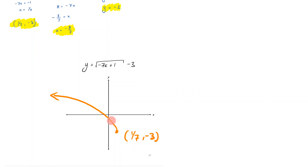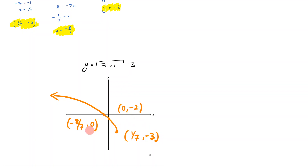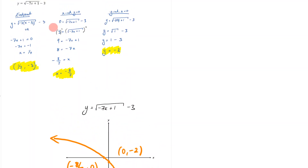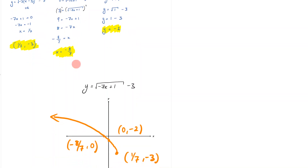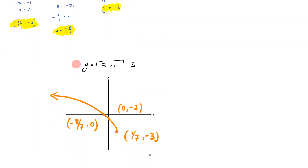The endpoint is at (1/7, negative 3). The y-intercept is at (0, negative 2), and the x-intercept is at (negative 8/7, 0). We've labeled the endpoint, the y-intercept, and the x-intercept with coordinates, thought about the reflections, and done everything neatly so the teacher can read and understand the work. Hopefully this has made sense and I'll see you in the next part.